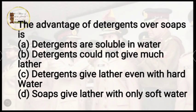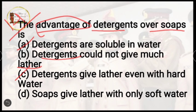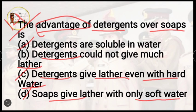Question number 14: the advantage of detergent over soap is — detergent is soluble in water, detergent could not give much lather, detergent gives lather even with hard water, or soap gives lather only with soft water. The correct answer is option C, detergent gives lather even with hard water. Soap only gives lather in soft water.